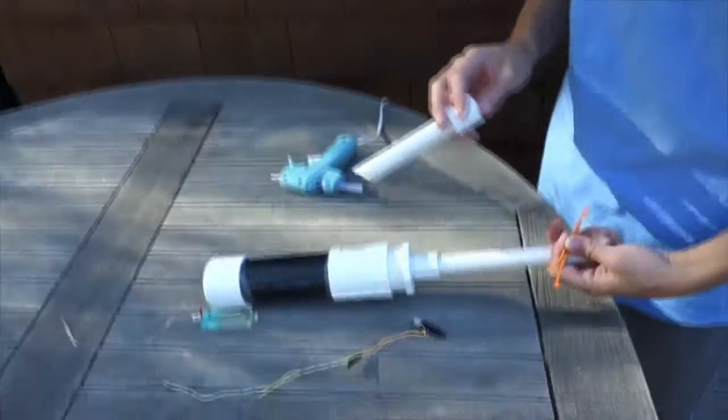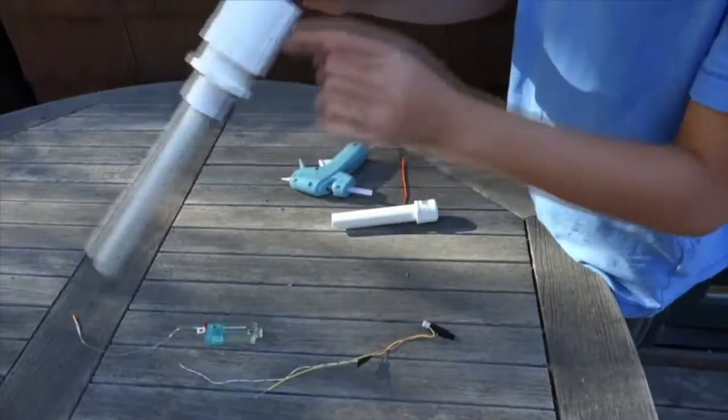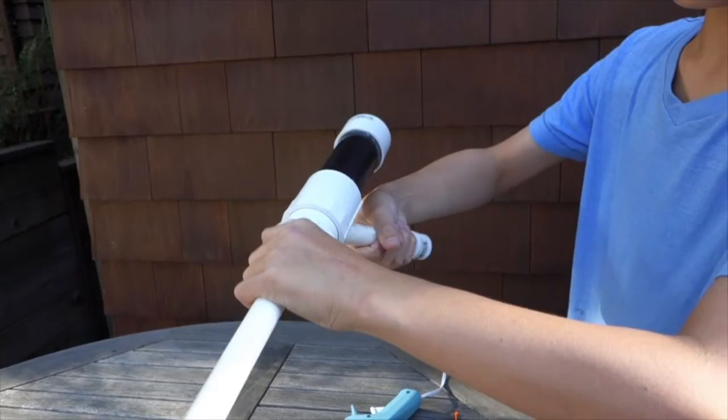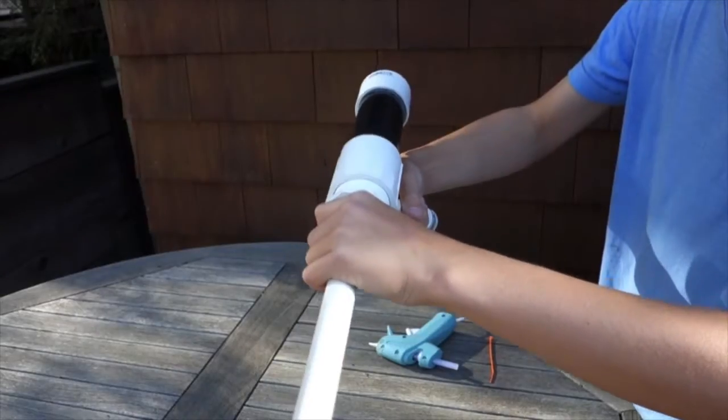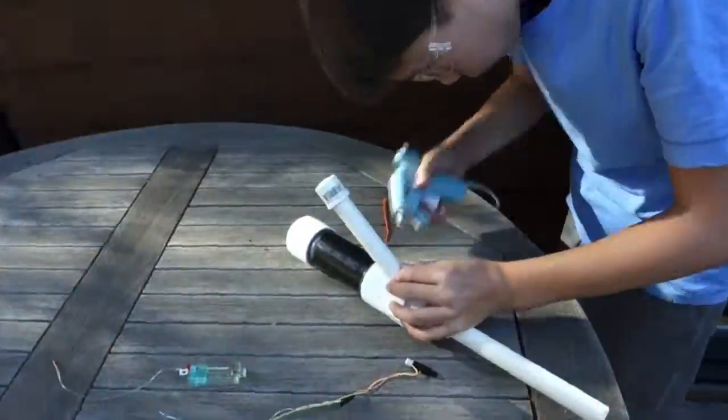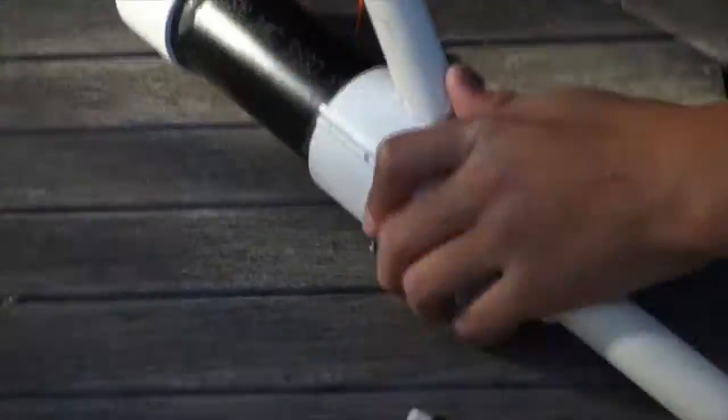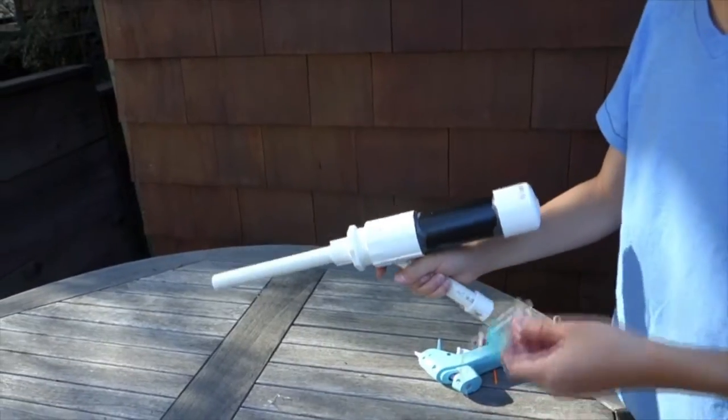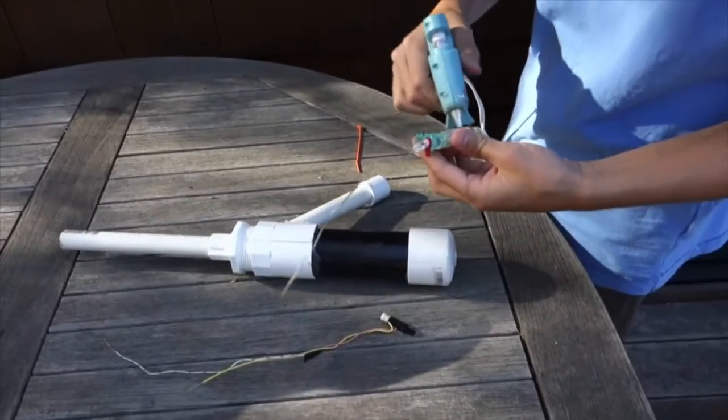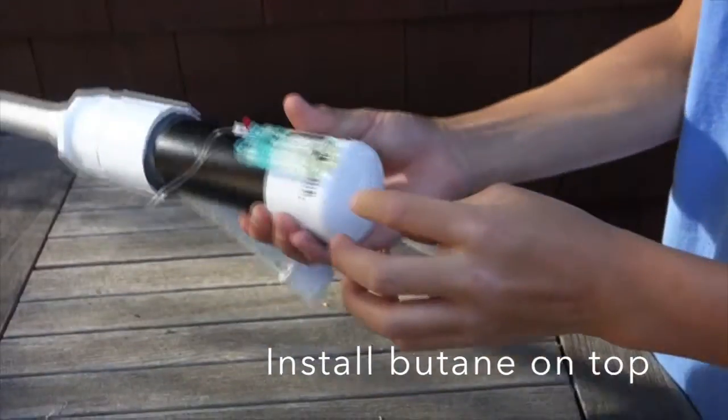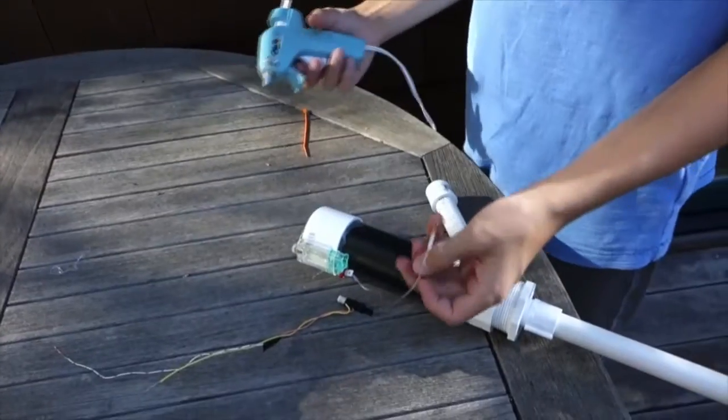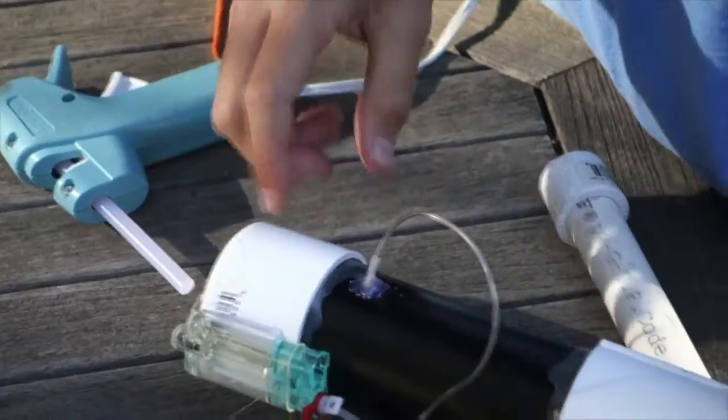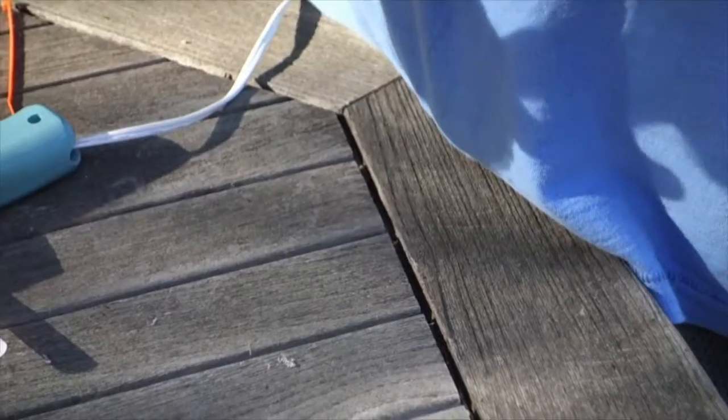Now we're installing the handle, butane can, and piezoelectric clicker. You have your two holes on the side where you're installing your handle. Find a comfortable position and hot glue it on. As you can see, the handle is glued on. Now we're gluing on the butane can. Put hot glue on the back, and make sure the refill valve is on the outside so you can still refill it. Stick it in the hole in the back and glue it. There you have it, you've installed your butane canister.